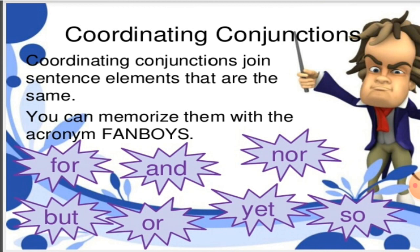We can memorize coordinating conjunctions with the acronym FANBOYS: F stands for FOR, A is for AND, N is for NOR, B for BUT, O for OR, Y for YET, and S is for SO. You can remember the coordinating conjunctions with the short form FANBOYS. These are the list of conjunctions which are coordinating.